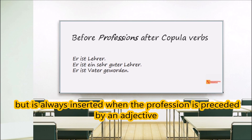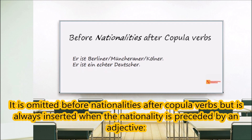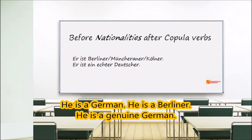It is omitted before professions after copula verbs, but is inserted when the profession is preceded by an adjective. For example: 'Er ist Lehrer.' But: 'Er ist ein sehr guter Lehrer.' Also: 'Er ist Vater geworden.'